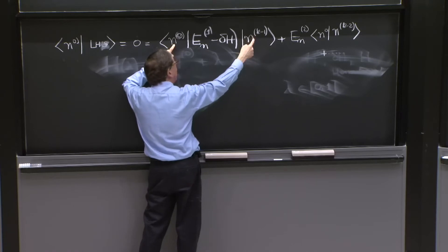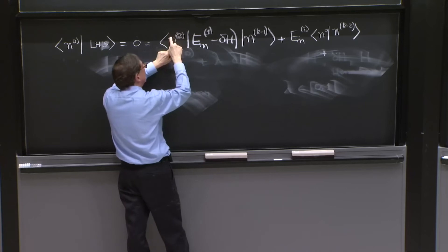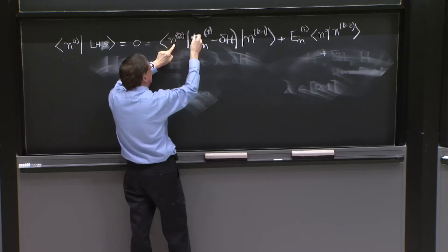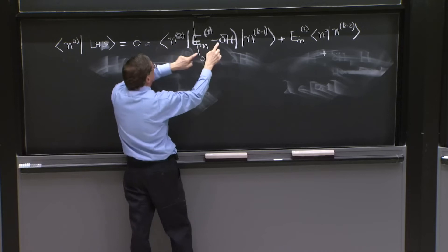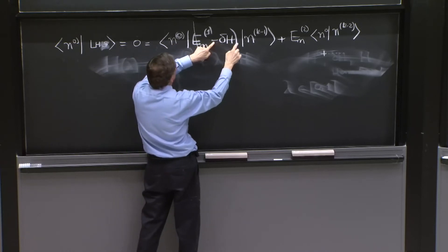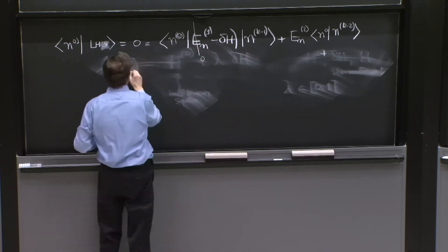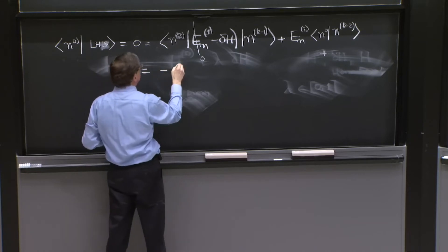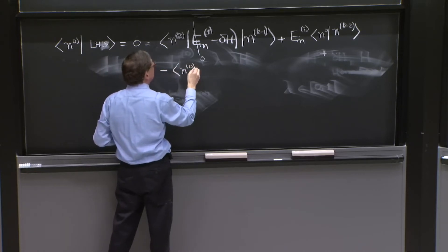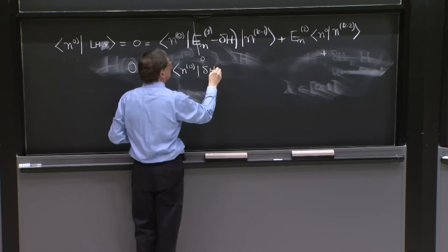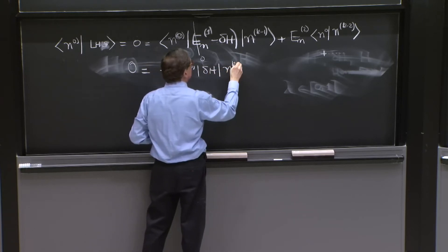But we said that all the higher corrections have no component along n0. So this thing will give you 0. On the other hand, here is an operator, so there's nothing I can say. I'll write it minus n0 delta h nk minus 1.